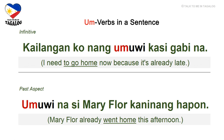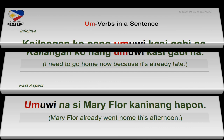Infinitive: kailangan ko nang umuwi kasi gabi na. Kailangan means need, ko is I, umuwi is to go home, kasi means because, and gabi na means it's already late — I need to go home now because it's already late. Past aspect: umuwi na si Mary Floor kaninang hapon. Umuwi means went home, na is already, kanina is earlier, and hapon is afternoon — Mary Floor already went home this afternoon.